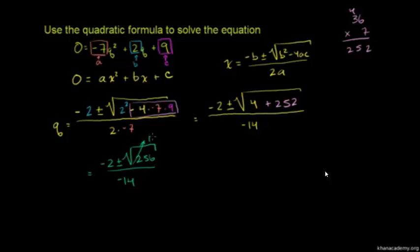This gives us -2 + 16 / -14 or -2 - 16 / -14. -2 + 16 = 14 divided by -14 is -1. So q = -1. Or -2 - 16 = -18 divided by -14 = 18/14, the negatives cancel out, which equals 9/7. So q = -1 or q = 9/7.